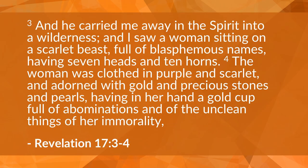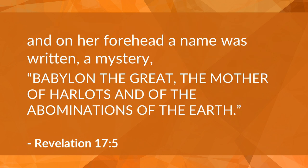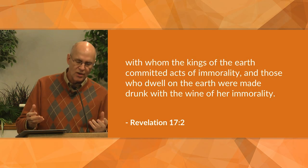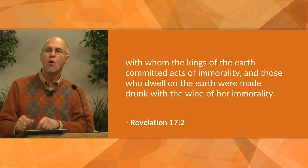Verse 3-6: 'He carried me away in the spirit into a wilderness, and I saw a woman sitting on a scarlet beast, full of blasphemous names, having seven heads and ten horns. The woman was clothed in purple and scarlet, adorned with gold and precious stones and pearls, having in her hand a gold cup full of abominations and the unclean things of her immorality. On her forehead a name was written: a mystery, Babylon the Great, the mother of harlots and the abomination of the earth. And I saw the woman drunk with the blood of the saints and with the blood of the witnesses of Jesus. When I saw her, I wondered greatly.'